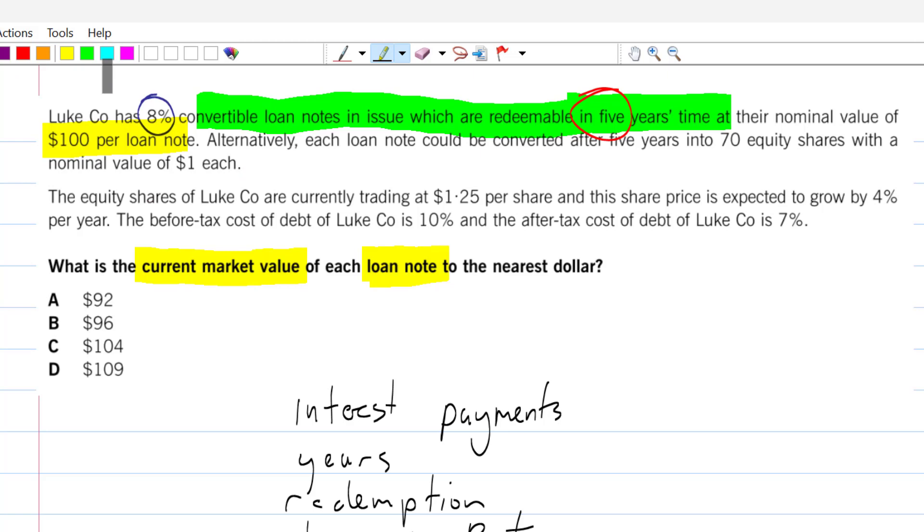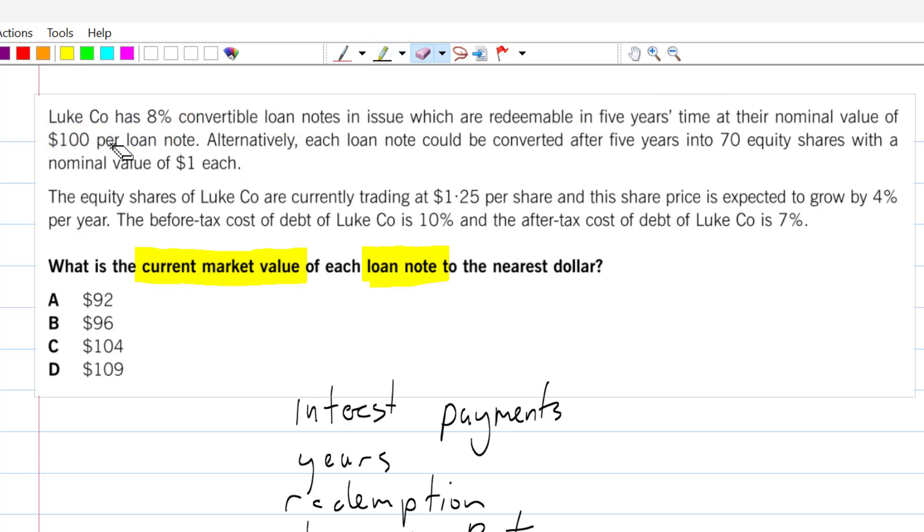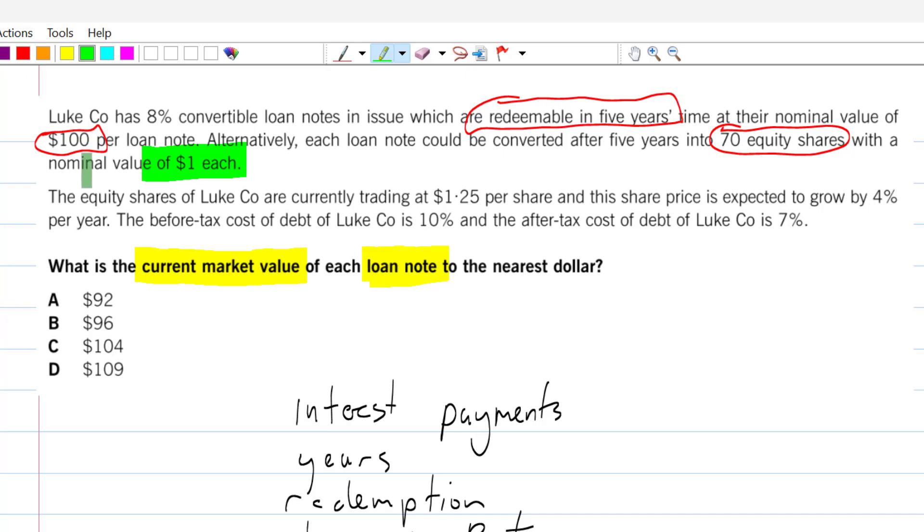Now here is the tricky business. We can redeem them in five years time. We can go back to the company, turn in our bonds and they will give us back the $100 that we paid, essentially the principal of the loan, or we could convert these loan notes into 70 shares. That is the convertible bond tricky business. Now we have a nominal value of the shares but that's not really going to help me right now. We also have more information here about market value that's going to help me and I'm going to come to that in a moment.